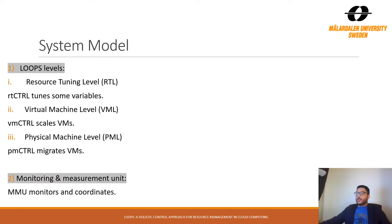The system model: LOOPS is composed of the following three control levels. They are resource tuning level (RTL), virtual machine level (VML), physical machine level (PML), and one essential unit called monitoring and measurement unit (MMU).